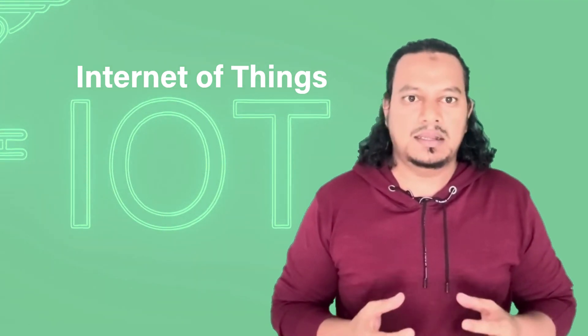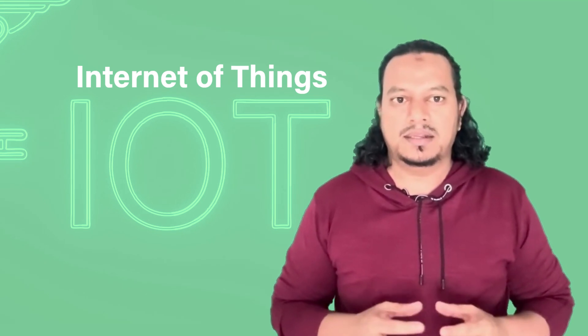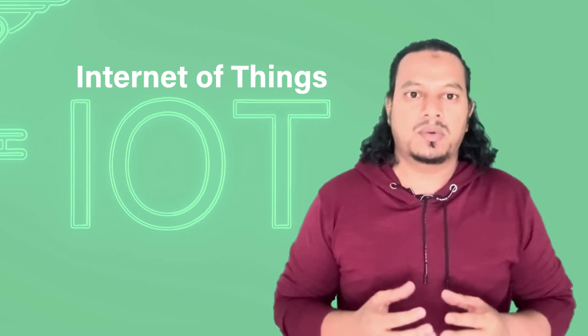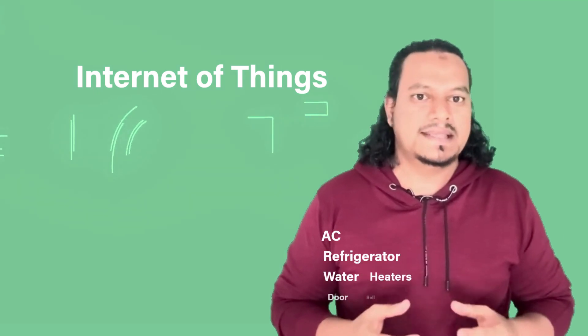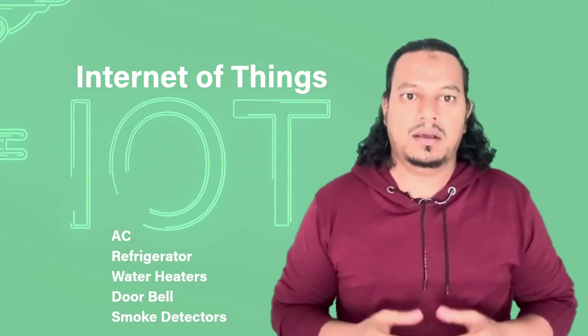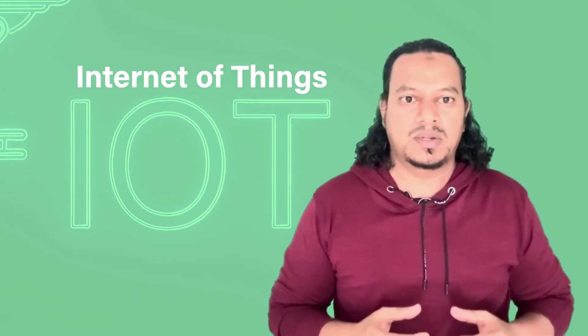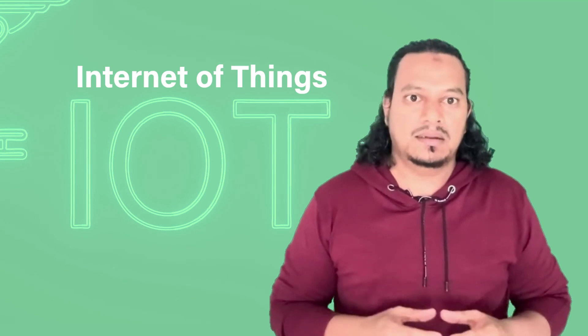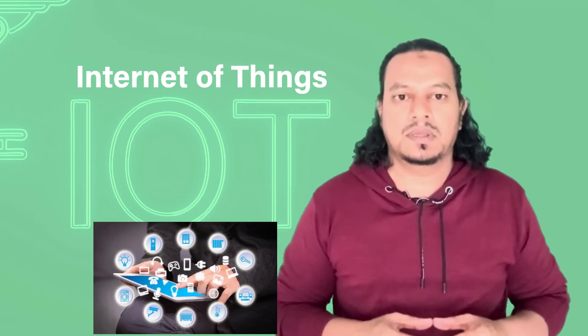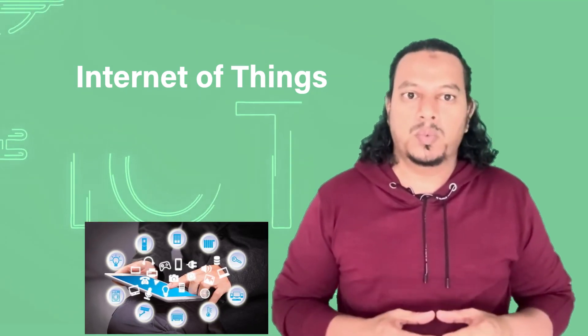IoT stands for Internet of Things or devices. All devices that are connected to a network can be monitored remotely. These devices—your AC, refrigerator, water heater, doorbell, or smoke detectors—are connected to a network and internally embedded with sensors. The data can be transferred and exchanged via wireless network without any human intervention.